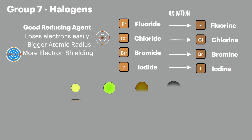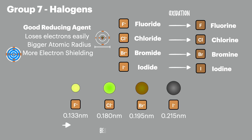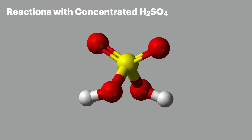As the halides increase in atomic radius going down the group — because they're each in different periods — the electron shielding and the atomic radius increases, making iodide the best reducing agent of them all. That's covered one part of our reaction: the halide ions. Now we're going to look at concentrated sulfuric acid.